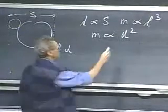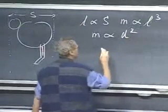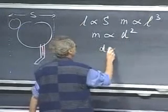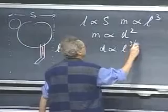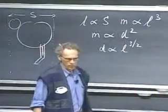And so you see immediately that d squared has to be proportional to L to the third, so d must be proportional to the length of the femur to the power one and a half.